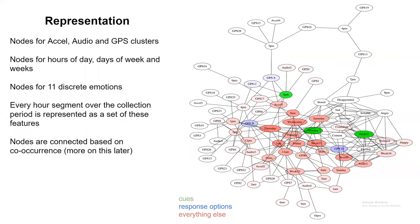To model this, we imagined that the memory system is constructed from a large number of nodes representing different aspects of the experiences that people had. We included nodes for accelerometry, audio and GPS clusters, nodes for the hours of the day, days of the week and weeks, and nodes representing each of the 11 discrete emotions.